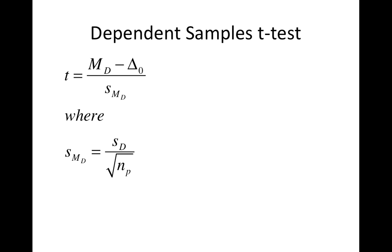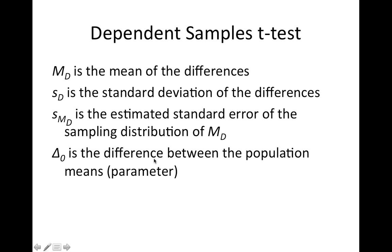Here is the formula. This is the mean difference. This is the standard error of the differences. This is our hypothesized mean difference — delta. Delta sub null here is what we're considering, and most of the time this is going to be zero, so this term just drops right out. The standard error of the differences is just the standard deviation of the differences divided by the number of pairs of scores.